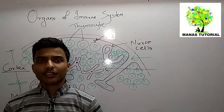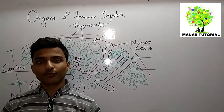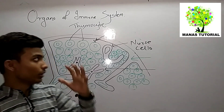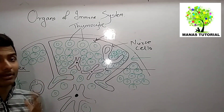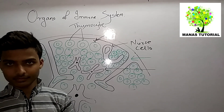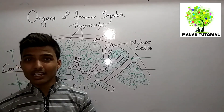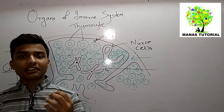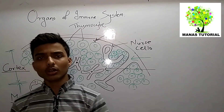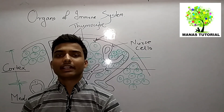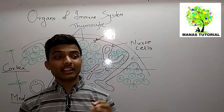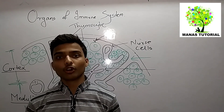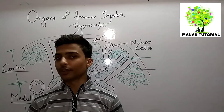Now we will discuss about the primary lymphoid organ known as the thymus. The thymus is also known as a training school for T cells, where T cells develop, mature, and proliferate.